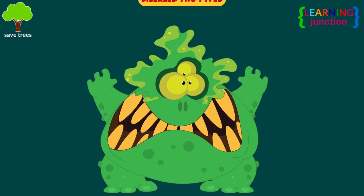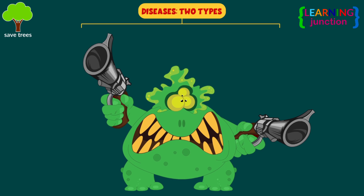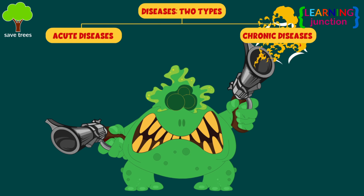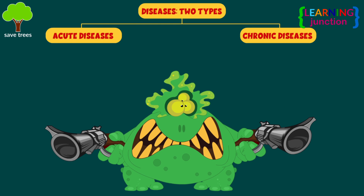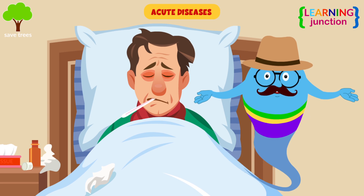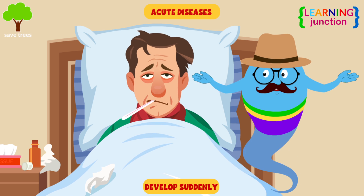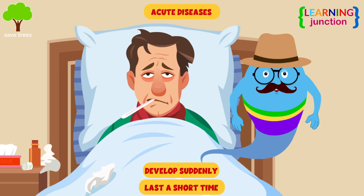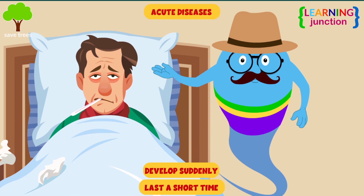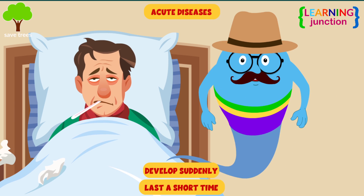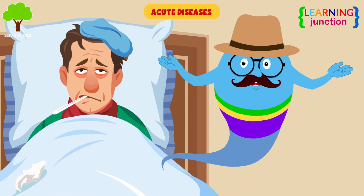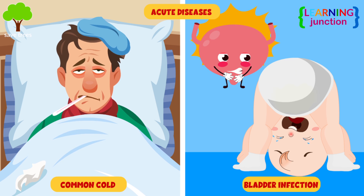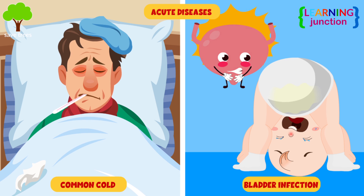Diseases can be of two types: acute diseases and chronic diseases. Acute diseases generally develop suddenly and last a short time, often only a few days or weeks. For example, most colds and bladder infections.